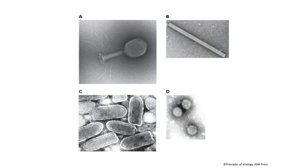For many years, people didn't know what viruses looked like — many thought they were just liquids. In the 1930s, the electron microscope was invented, and finally people could look at viruses and see these amazing shapes: tobacco mosaic virus, bacteriophages, a virus related to rabies, and a virus that causes gastroenteritis. Finally, it was shown that viruses are particulate, and from that point on people could really get a grip on what they were.